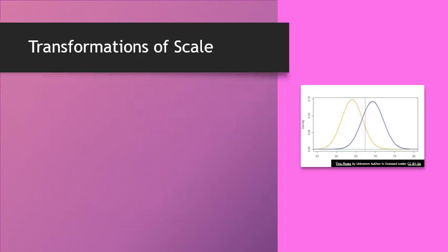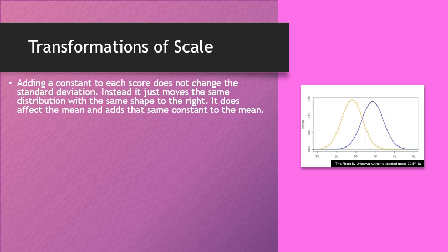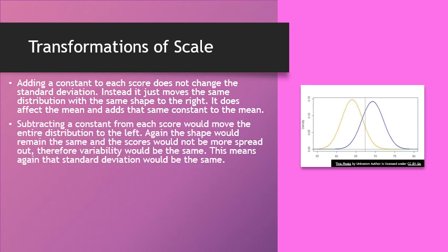Let's talk about transforming. Adding a constant to each score does not change the shape or the standard deviation. Instead, it just moves the same distribution with the same shape to the right. It does affect the mean and adds that same constant to the mean. Subtracting a constant from each score would move the entire distribution to the left.